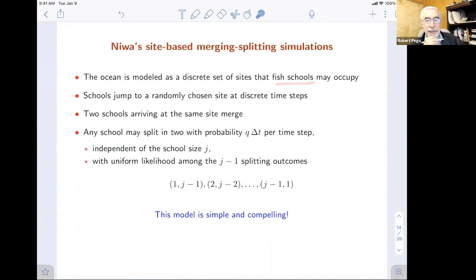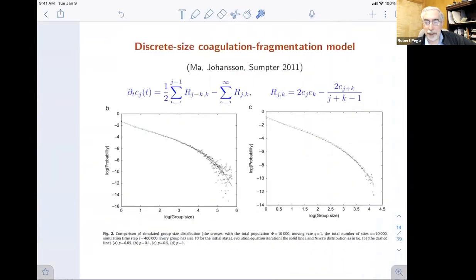Fish schools jump around the ocean randomly. Schools jump randomly to chosen sites. If they arrive at the same site, they merge. They can split in two with a small probability per time step, independent of school size, and uniform likelihood among the different splitting outcomes. So that defines a pretty nicely defined merging splitting process. It's a very compelling model. It lends itself to coagulation fragmentation modeling, which he didn't do himself, but he knew about it.